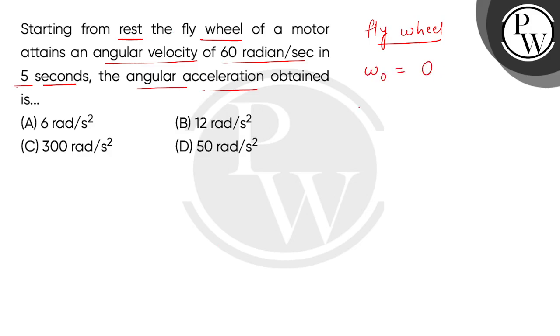...is 0, and the time span is 5 seconds. In 5 seconds it will attain an angular velocity of 60 radian per second. This means the rotational speed is increased, and we have to find its angular acceleration.